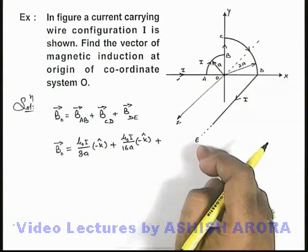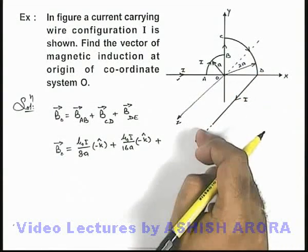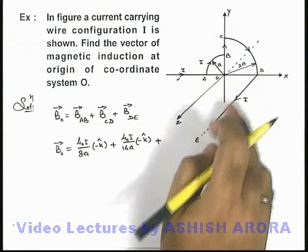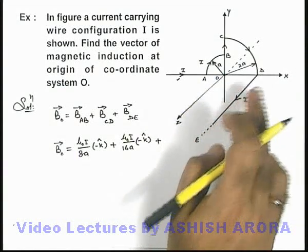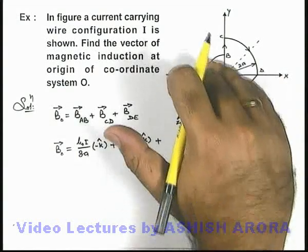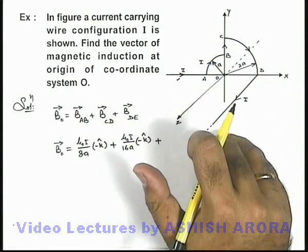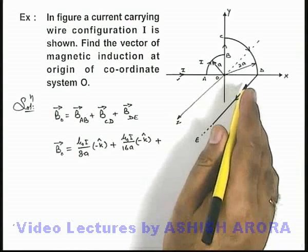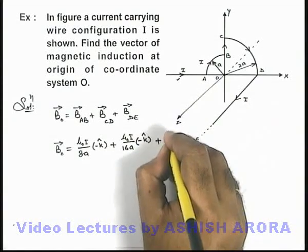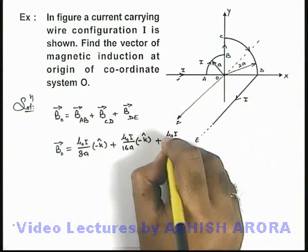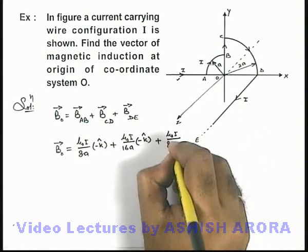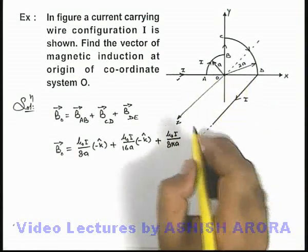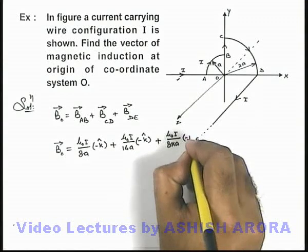Plus, this wire DE - here we can see it is a straight long wire in the xz-plane. So at the origin, it'll produce a magnetic induction perpendicular to the xz-plane, and here by the right-hand thumb rule, we can see it'll be in the minus y direction. So due to a semi-infinite wire, the magnetic induction is μ₀I/8πa, and we'll put a unit vector here.